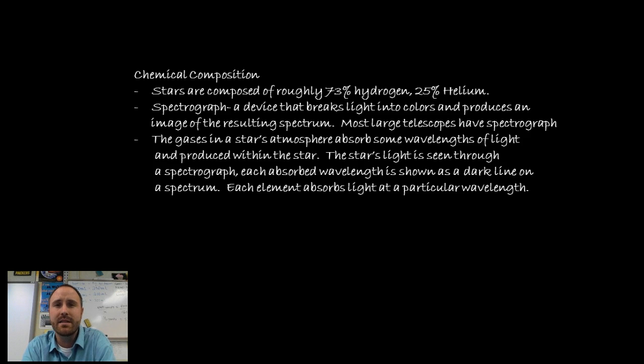What it does is it breaks light into colors and produces an image of the resulting spectrum. It's kind of a fancy way of saying basically inside a telescope we can look and see that certain wavelengths produce these lines that are on this spectrograph and we're able to determine what it's made up of and how much wavelength is being accepted and not accepted. So chemical composition helps us also to classify stars based on how much of the wavelengths are being absorbed.